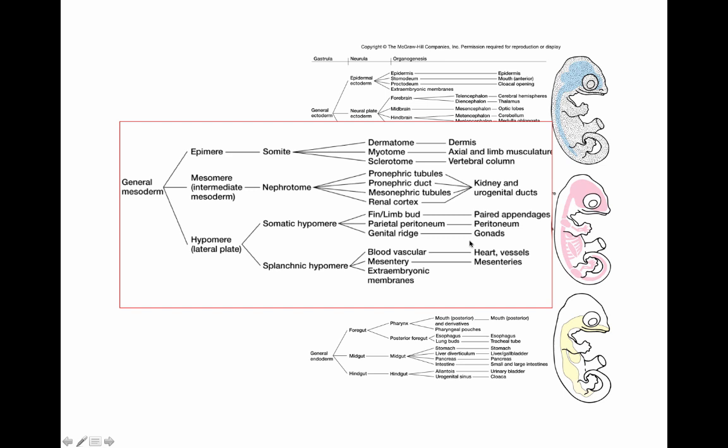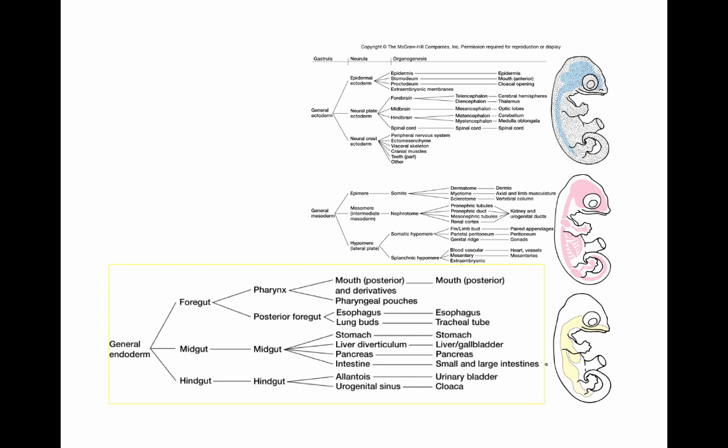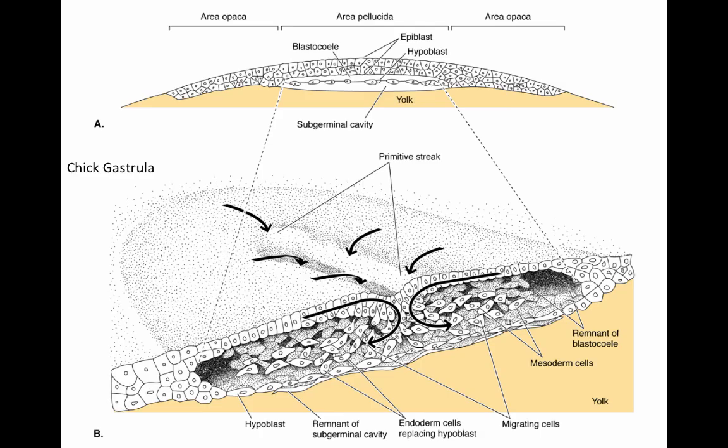Endoderm is easy to remember because all it gives rise to is the gut tube and structures developmentally derived from it, such as the liver and gall bladder, pancreas, the urinary bladder, and parts of the cloaca. All of these are derived from endoderm.